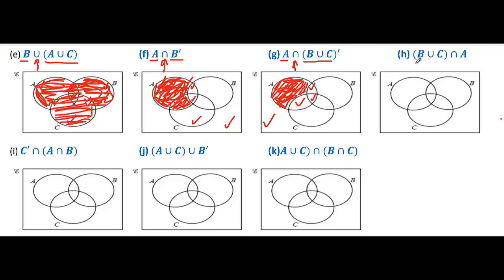Here first we have to identify B union C. B union C means B and C — we tick B and C. Don't double tick in this case. Then we have to identify A — here is A and here is A. What is the symbol between them? Intersection. So we shade only the double tick region. So this is our desired shaded region.